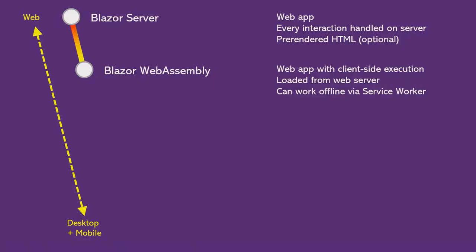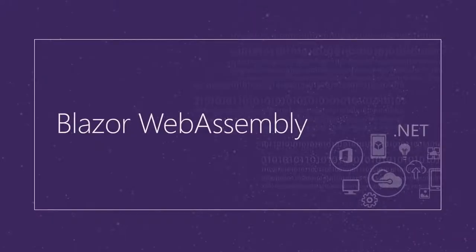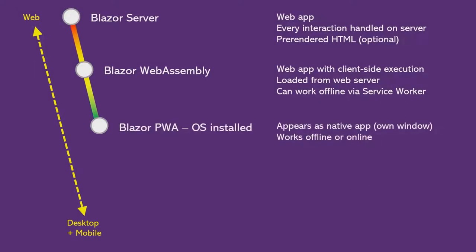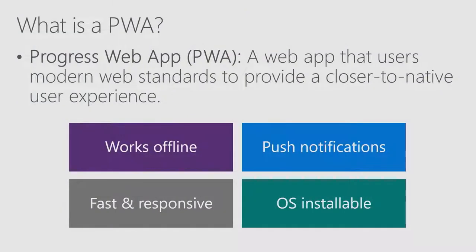That's Blazor WebAssembly. Now, we can use some of the more modern web standards in our Blazor WebAssembly app to make it even more native-like. Apps like this are typically called Progressive Web Apps, or PWAs. A PWA is just a web app, but it uses modern web standards to enable things like offline support — you add a service worker so files can be cached and used even when the browser is not connected — support for push notifications, and PWAs are fast and responsive so they have that native app-like feel. On some platforms, they can even be OS installable — you can pin them to your home screen on your phone or install them on Windows 10 so they run from your Start menu. We can take our Blazor WebAssembly app and turn it into a PWA.